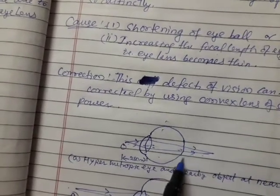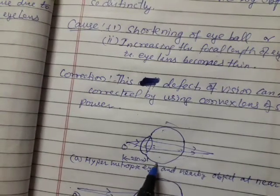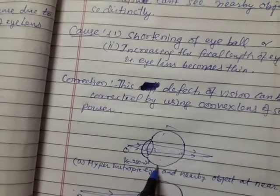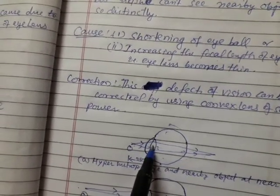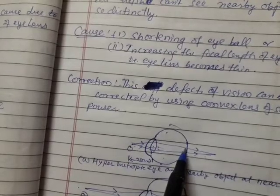Earlier, the distance was up to here, like the curvature was this, but now the curvature is reduced so that the distance between eye lens and retina is reduced.